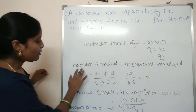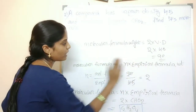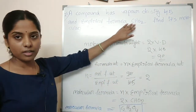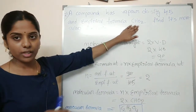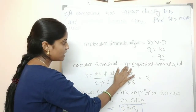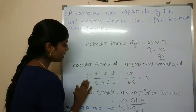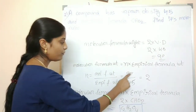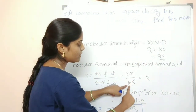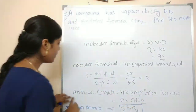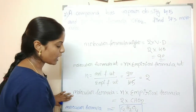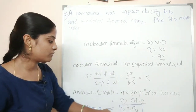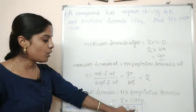Now, molecular formula weight equals N into empirical formula weight. We already have the empirical formula CHO2, which equals 45. So N equals 90 divided by 45, which is 2. Therefore, the molecular formula is 2 into CHO2, which equals C2H2O4.